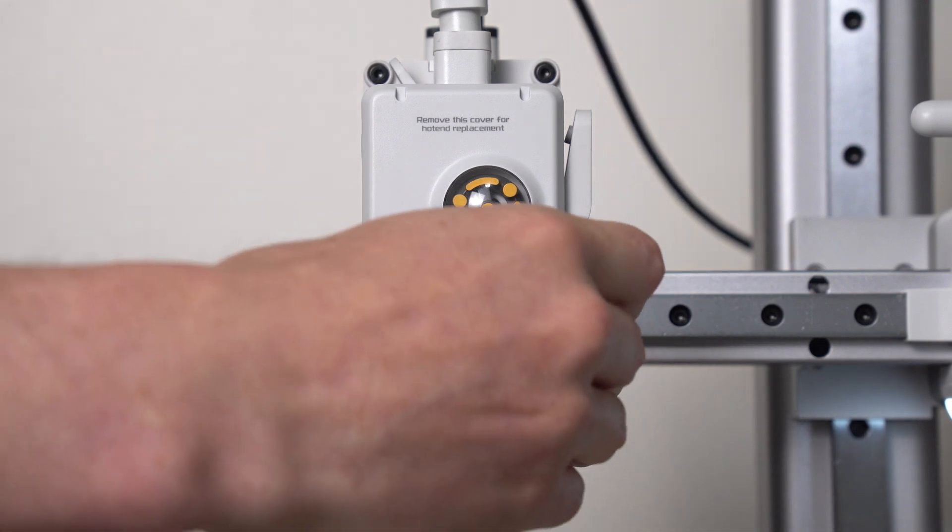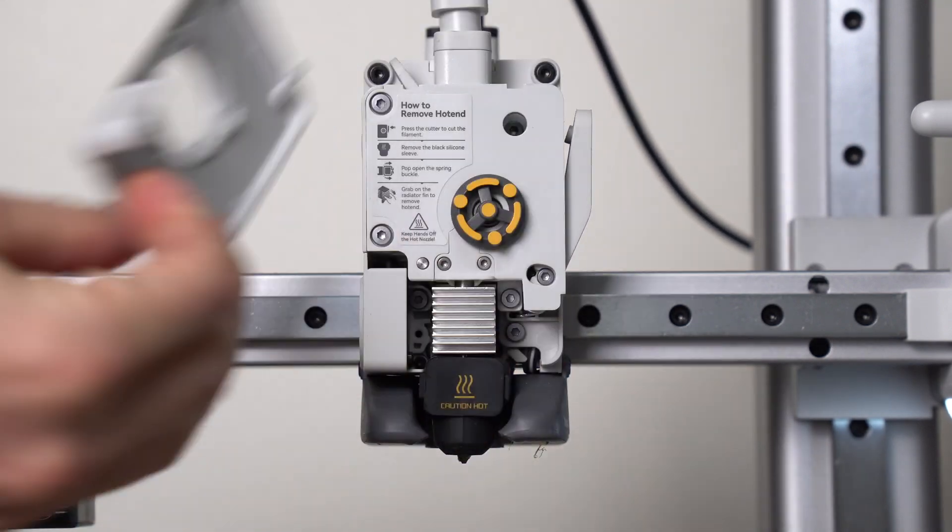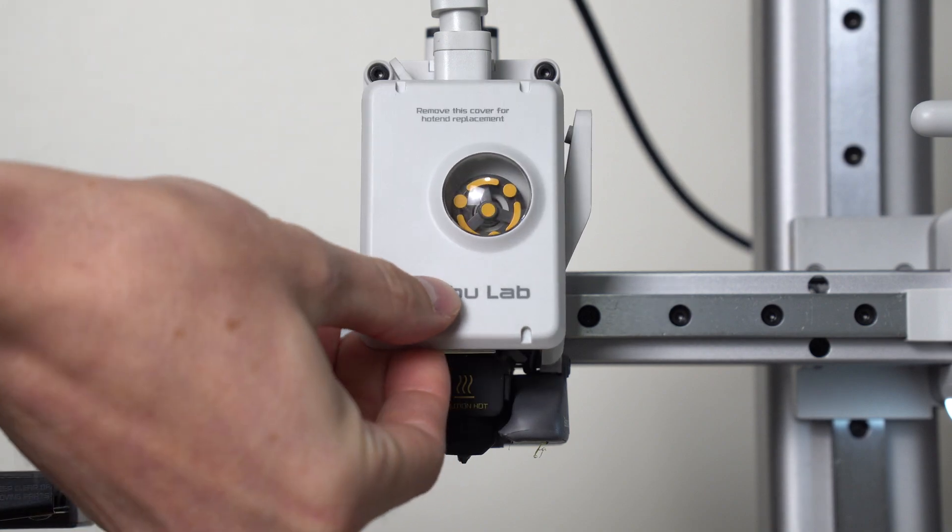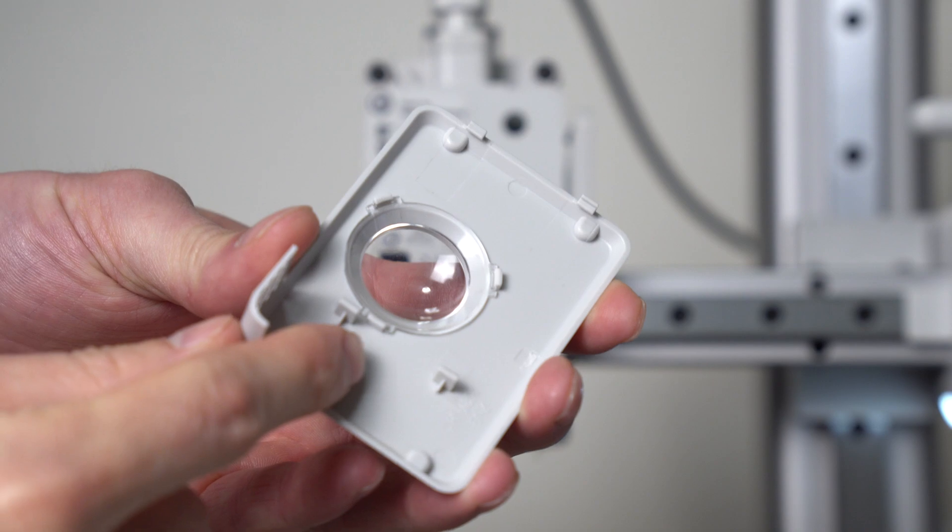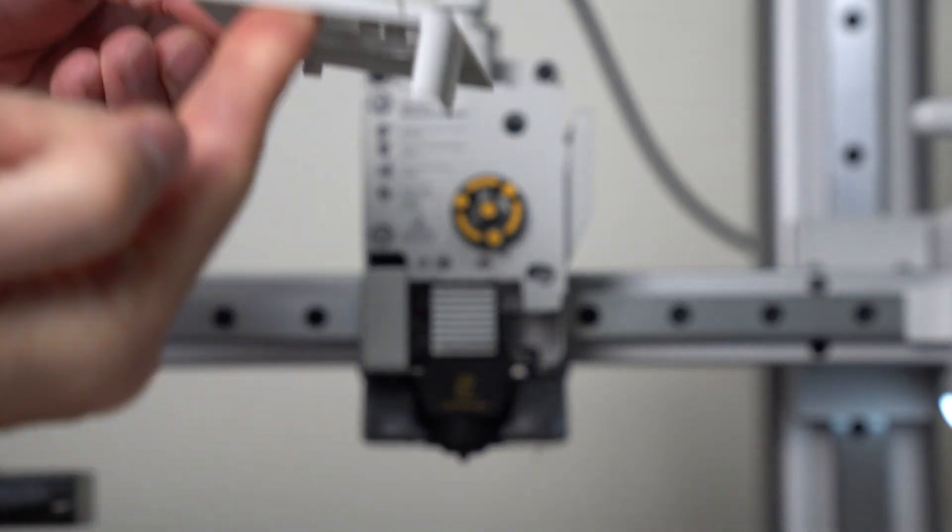All you're going to do is pull the front cover off like so. It hangs off these top clips and then these inner clips hook on so you just have to tilt it out.